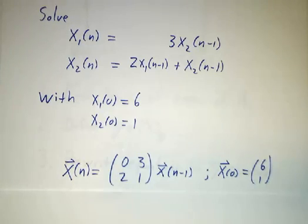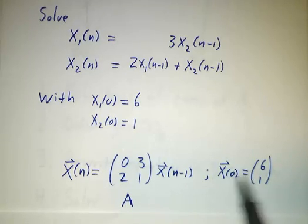So, in terms of matrices, we're saying we want to solve x of n is this matrix times x of n minus 1. We'll call the matrix A, and we have the initial condition 6, 1.